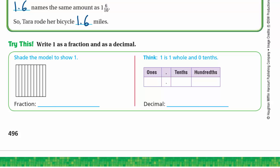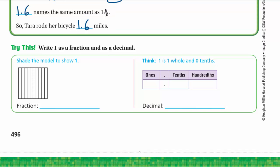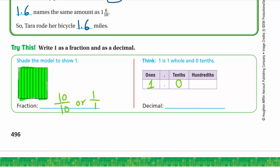Try this: write 1 as a fraction and as a decimal. To show a whole one, we shade the entire square — all 10 parts, which is 10 tenths. We can write it as 10/10 or 1 over 1. In the place value chart we have 1 in the ones place, then the decimal point, then 0 tenths and 0 hundredths, so we write 1.0 or 1.00.